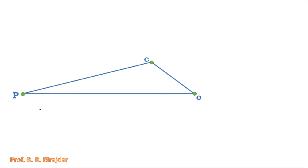Now we draw the velocity diagram. From point O, draw a perpendicular line to the line PO. Then from point C, extend the line CP to cut the perpendicular line just drawn.